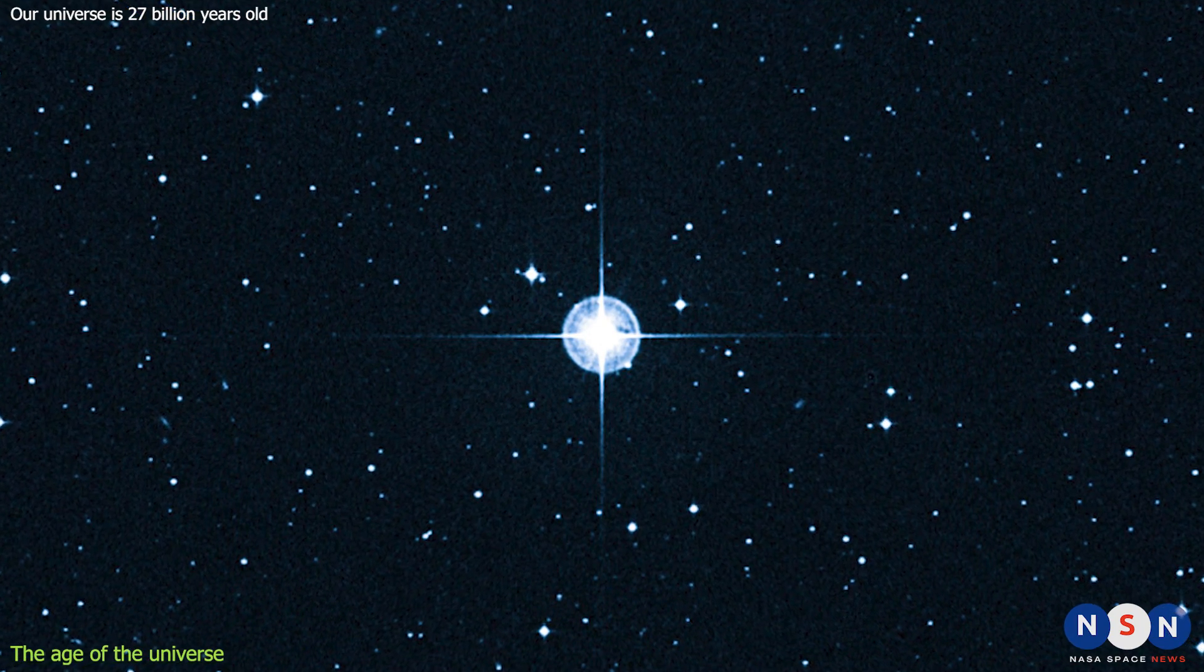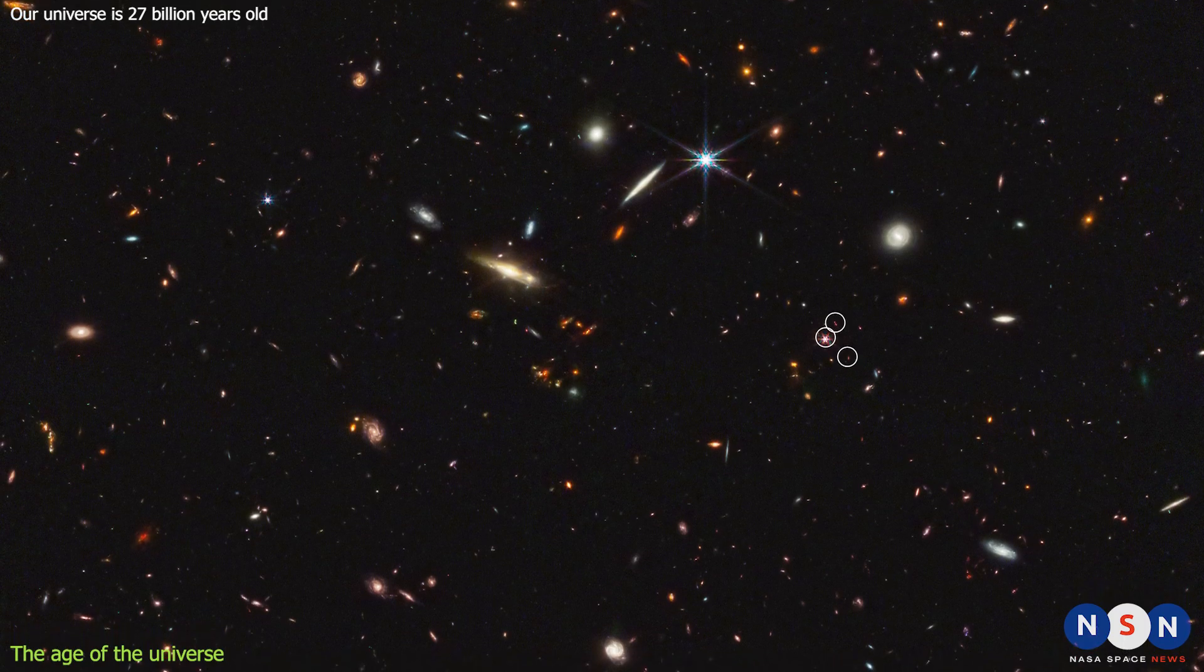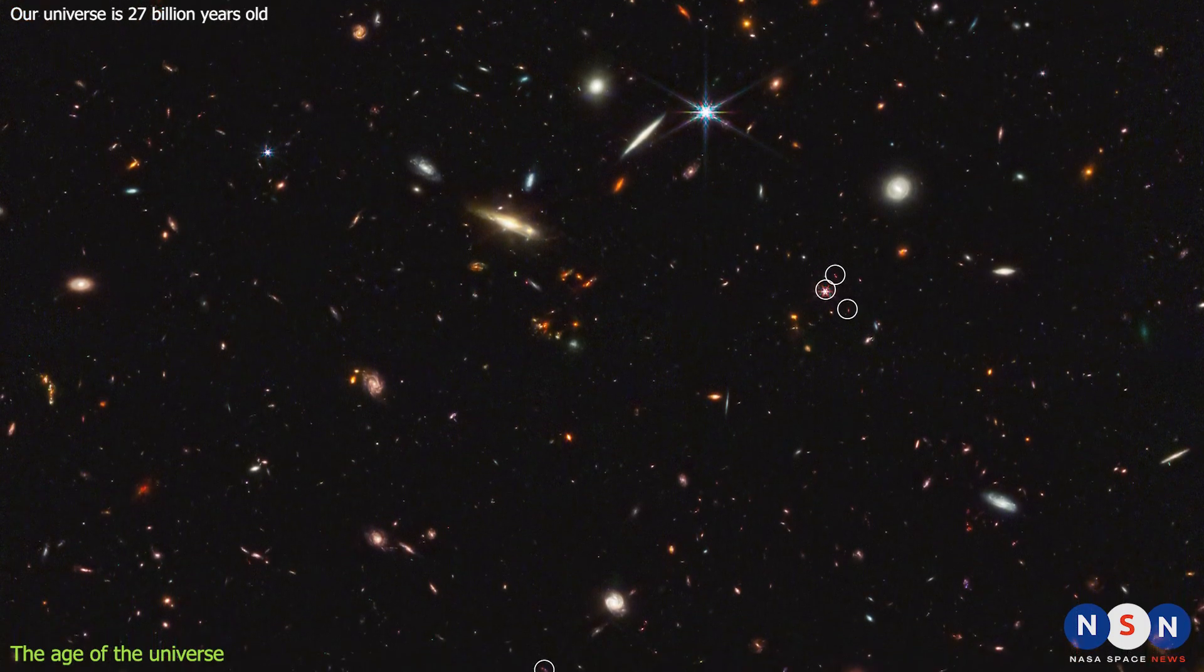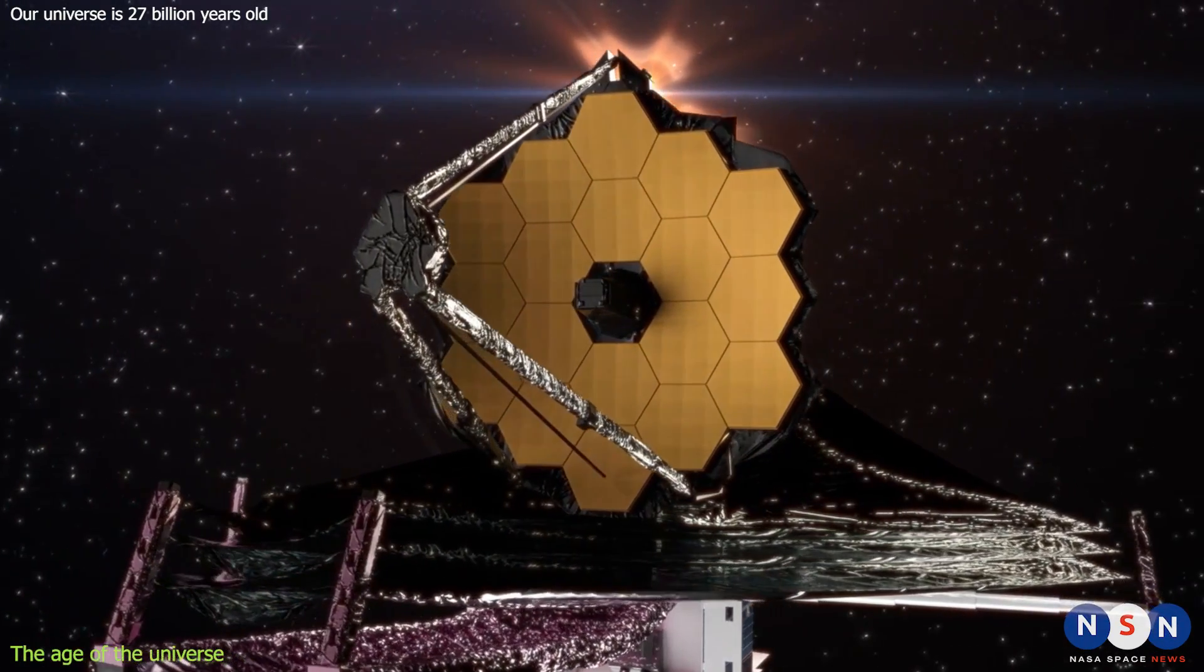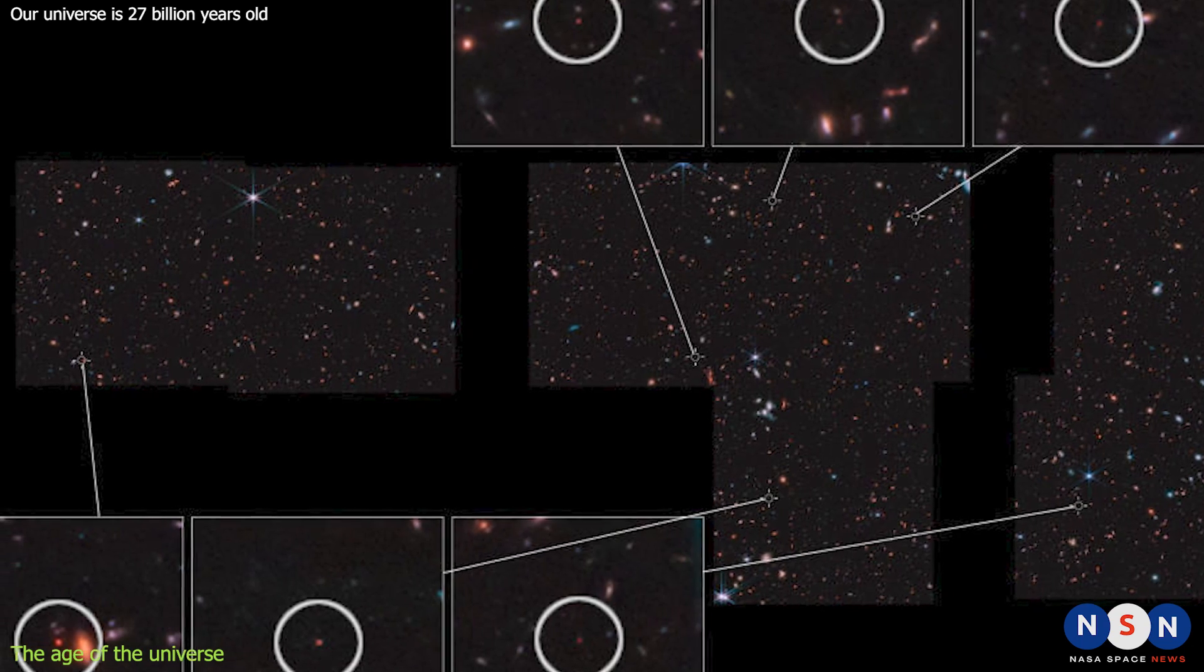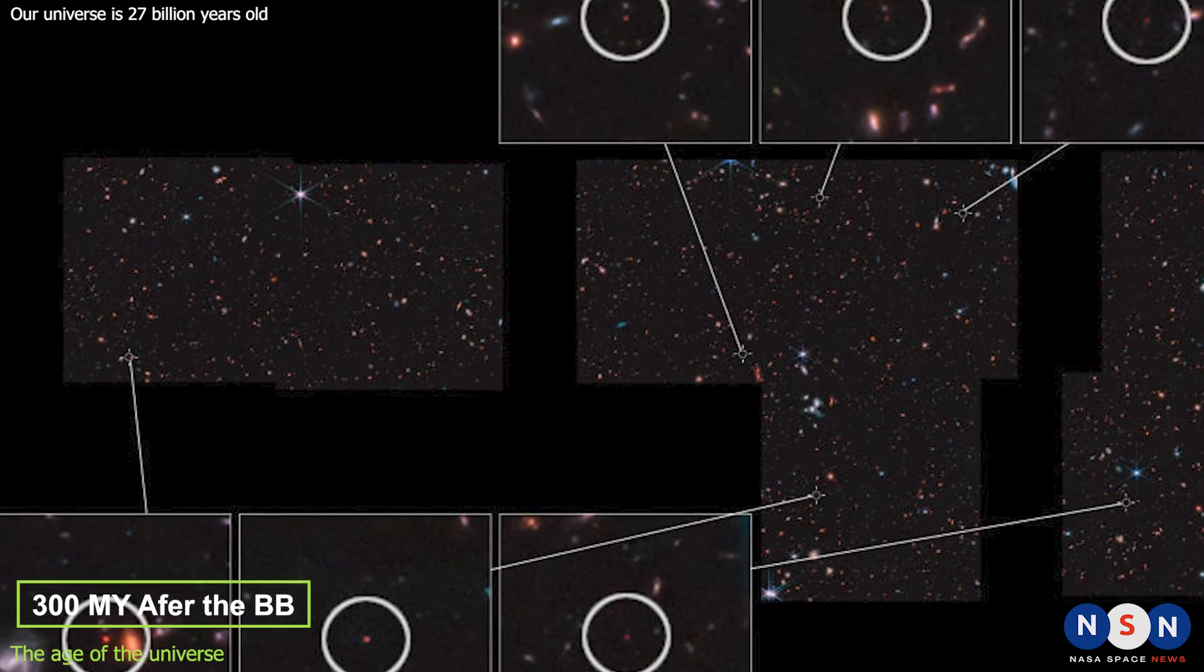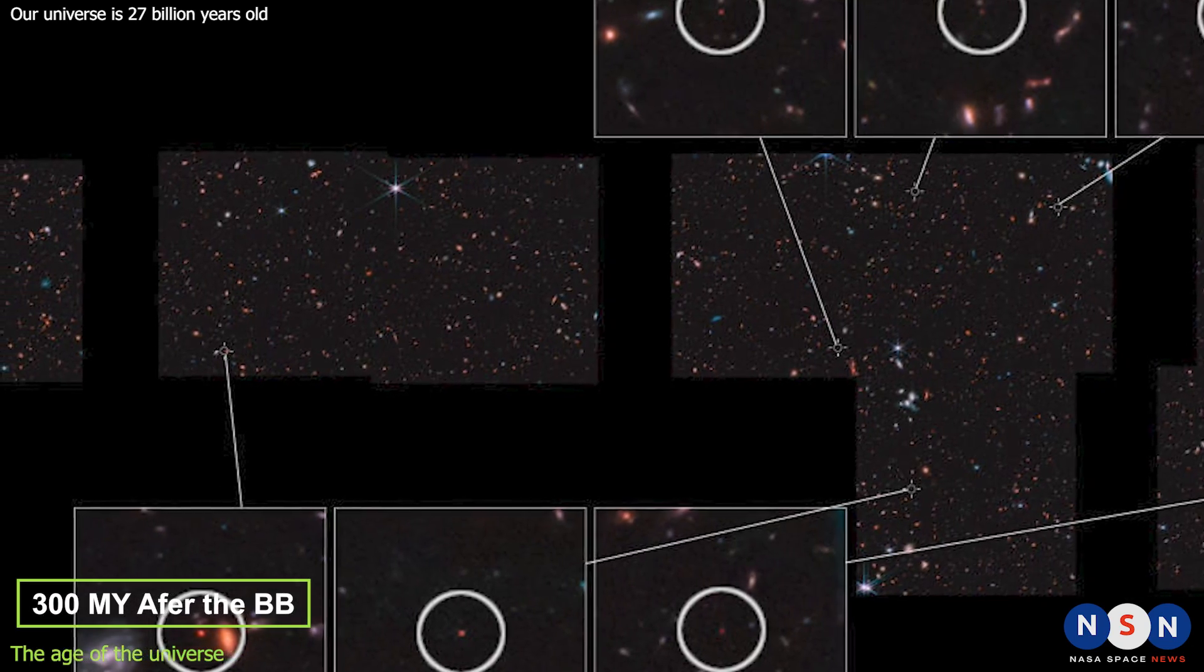But Methuselah is not alone. There are many other stars and galaxies that appear to be too old for our current estimate of the age of the universe. And the James Webb Space Telescope has just recently discovered some of them. One of JWST's first discoveries was a group of galaxies that were around just 300 million years after the Big Bang,